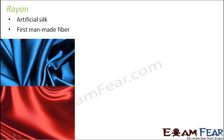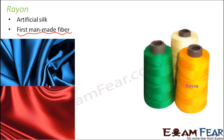Rayon is the first man-made fiber — the first fiber artificially manufactured by humans. Its appearance looks exactly like silk. These rayon threads are woven together to form the rayon fabric.